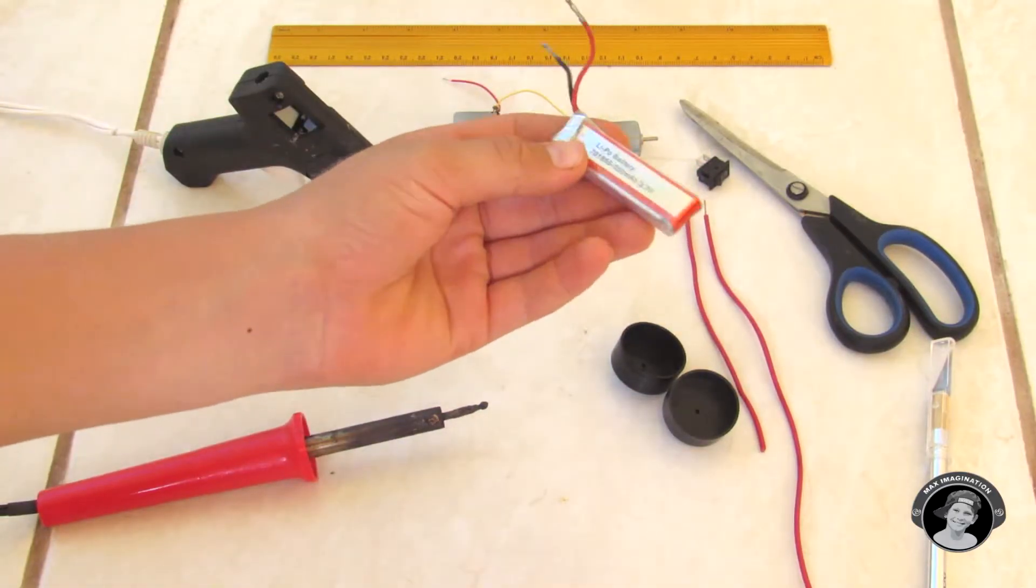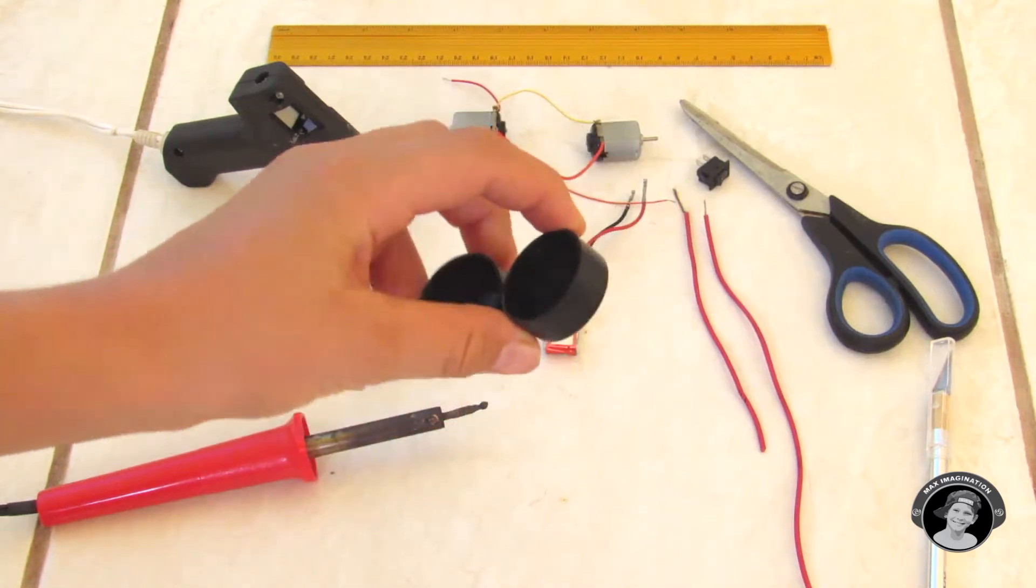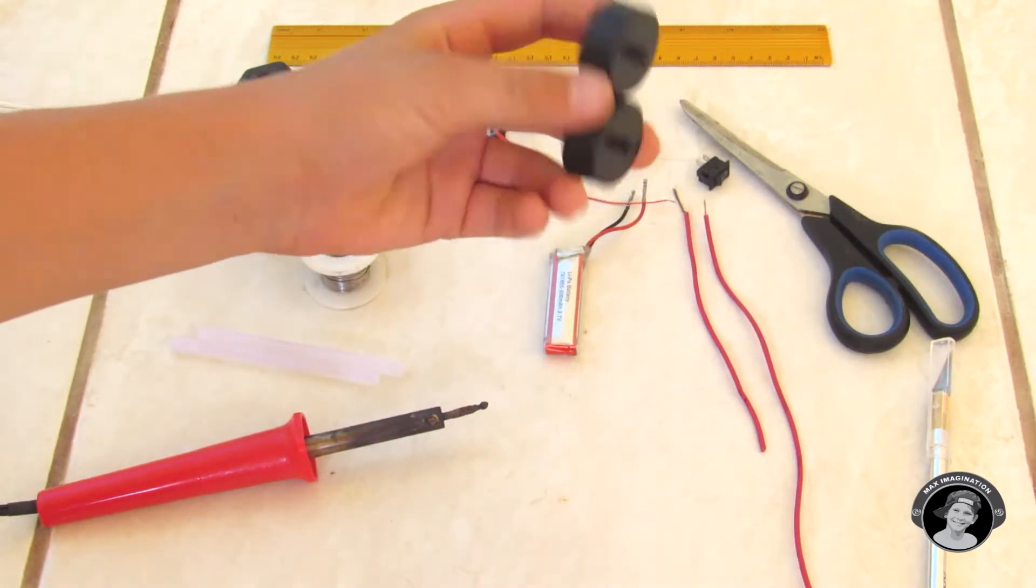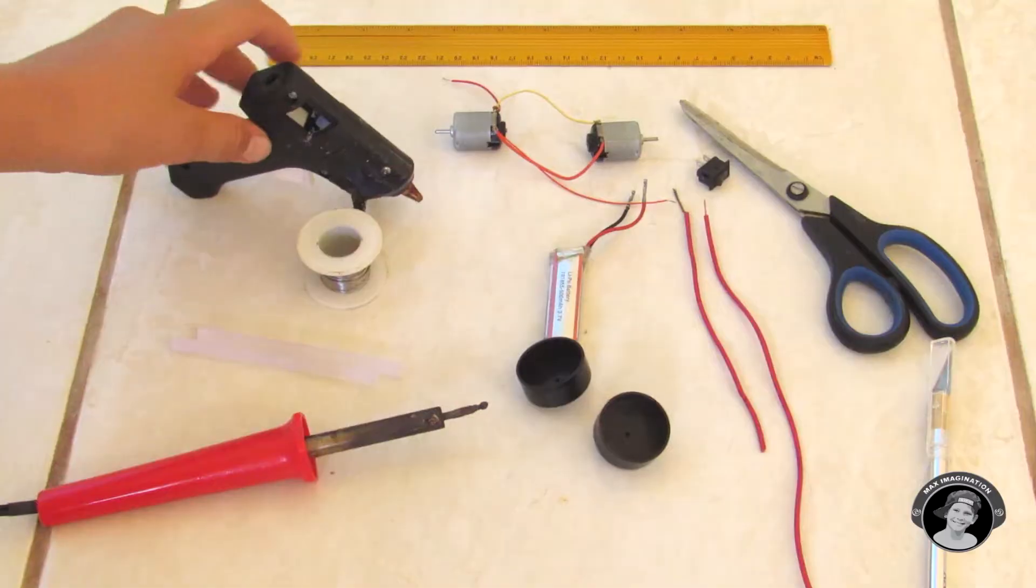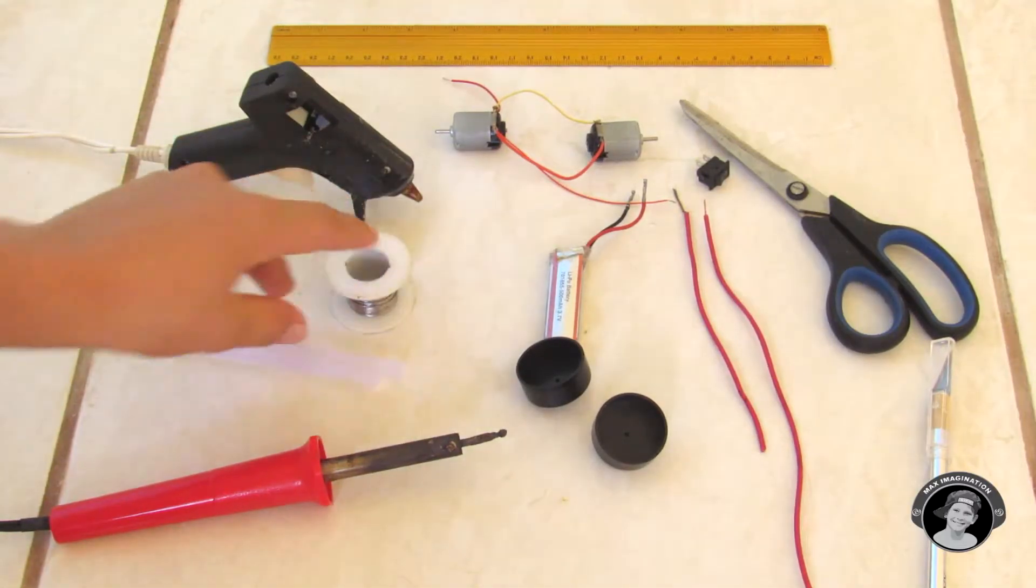A lipo battery that is about 3.7 volts, two of these flywheels that will be going on to the DC motors to spin the airplane, a hot glue gun with some hot glue sticks, a soldering iron with some soldering lead.